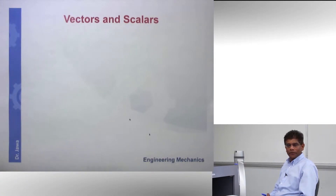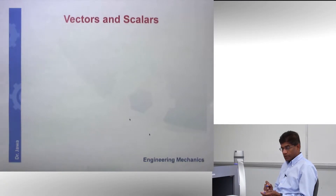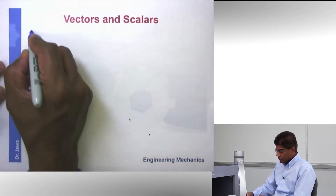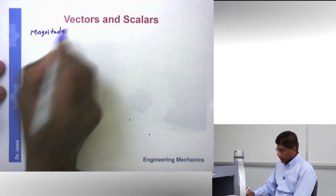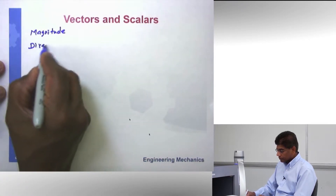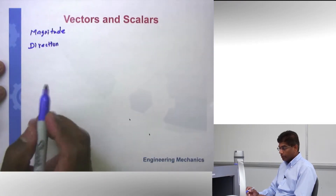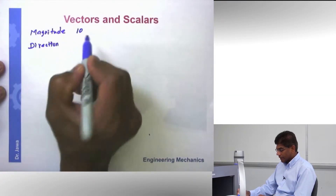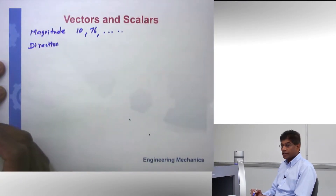All right everybody, let's take a closer look at vectors. We talked about vectors a while ago, and we know vectors are quantities — physical quantities that have magnitude and direction. Magnitude is simply a number. It could be something like 10, 76, and so on. It is just a number, a value.